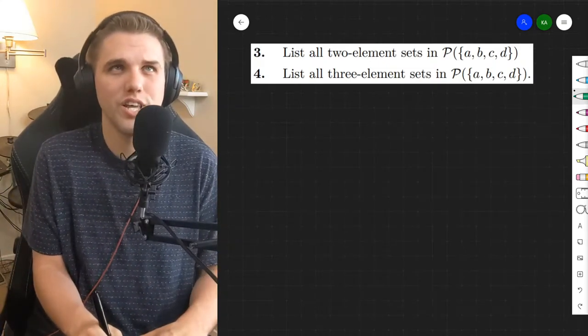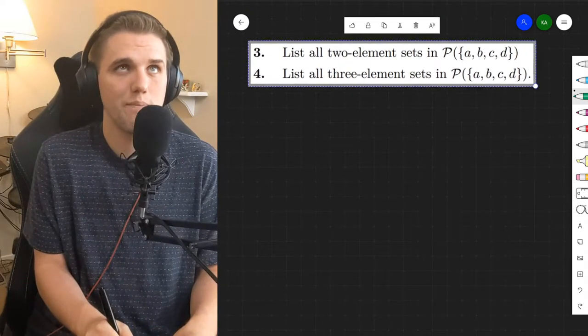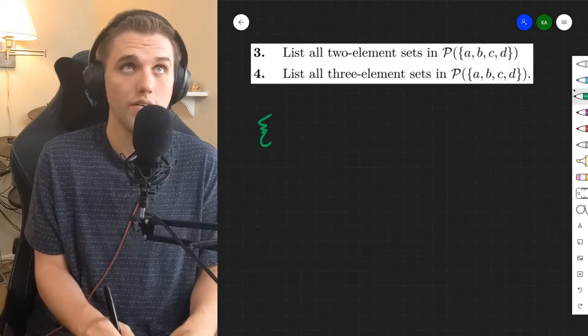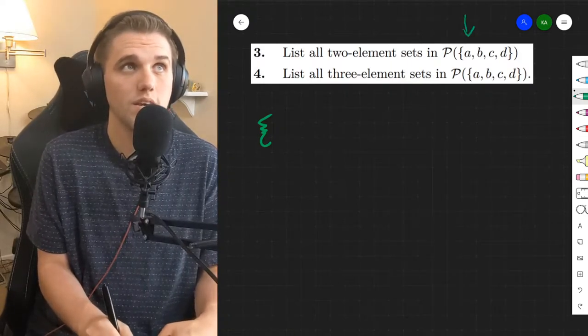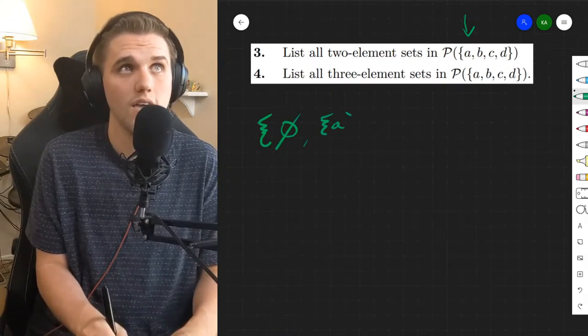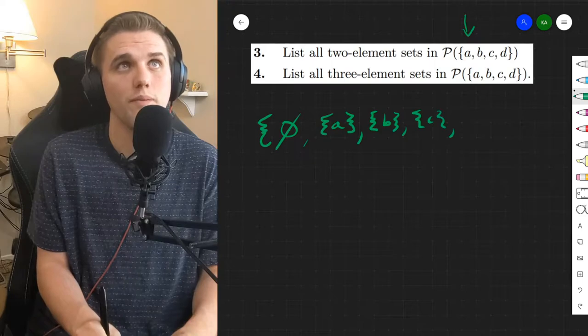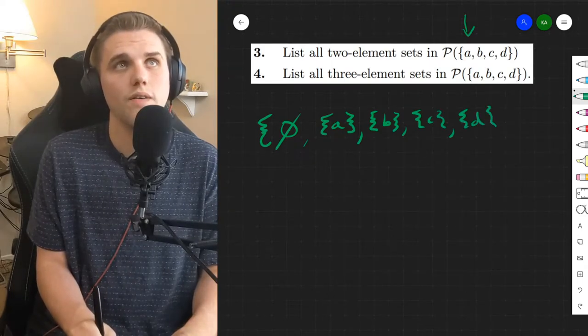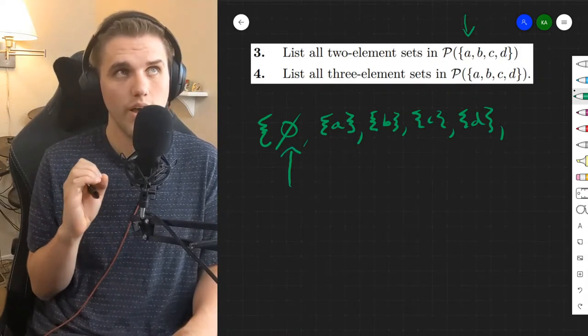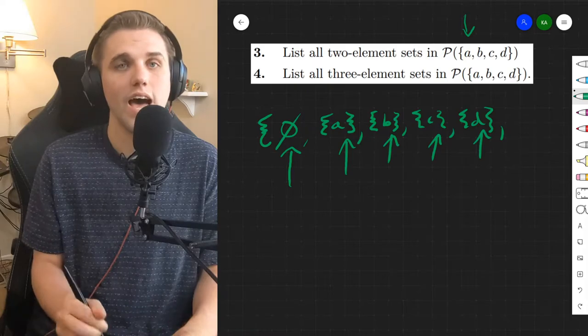So let's take a look at what the power set of A, B, C, D is. The power set, by definition, is a collection of all of the subsets of this set right here: A, B, C, and D. For example, the empty set is a subset of everything. The set containing A is a subset of A, B, C, D. So we have one element that has zero elements inside that element. We have four sets that have one element.